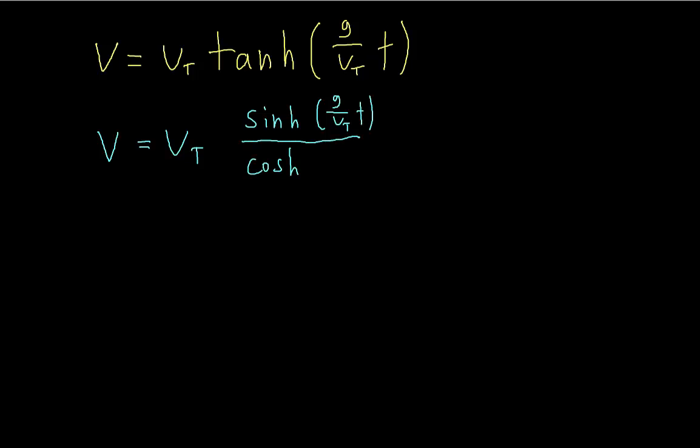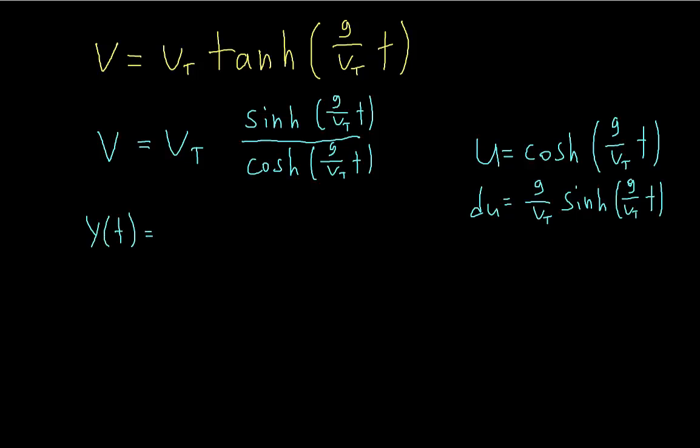So all we need to do is a u-substitution. We make u hyperbolic cosine of all that stuff. This is exactly the same way as how you integrate tangent, the normal tangent. Except remember that the derivative of hyperbolic cosine is not negative hyperbolic sine, it's just hyperbolic sine. So we make the u-substitution and then carry out the integration.